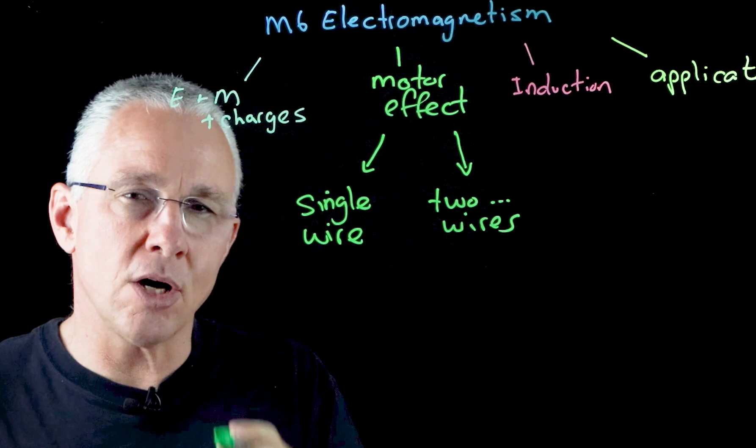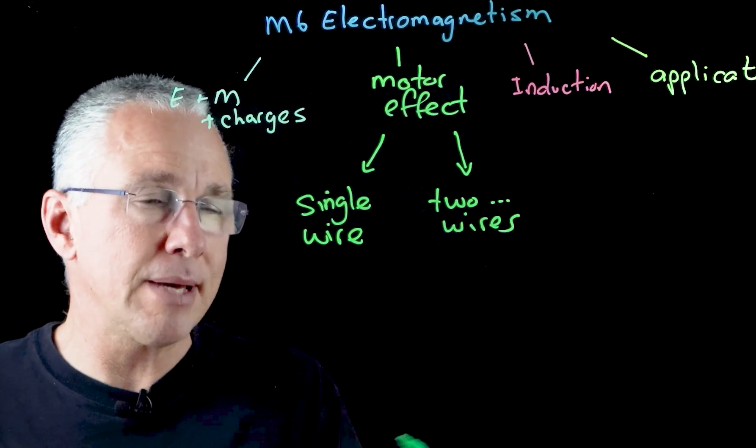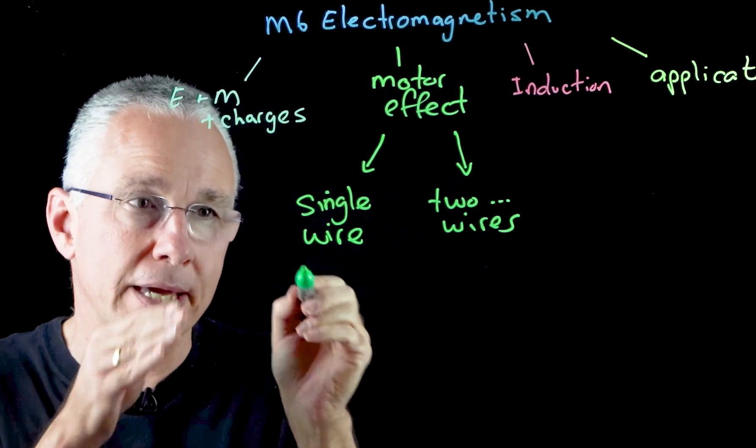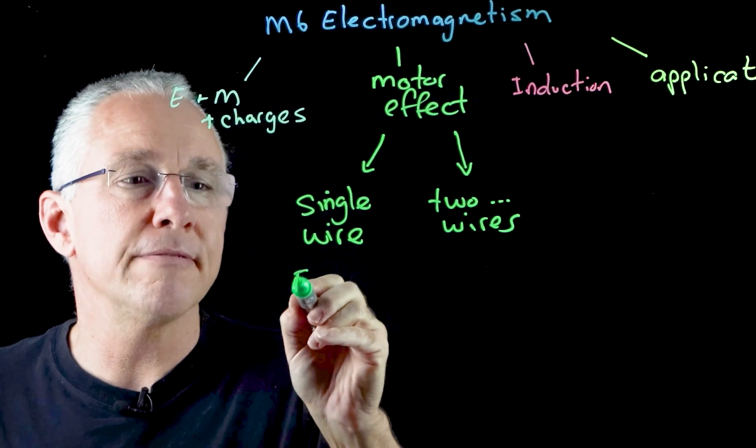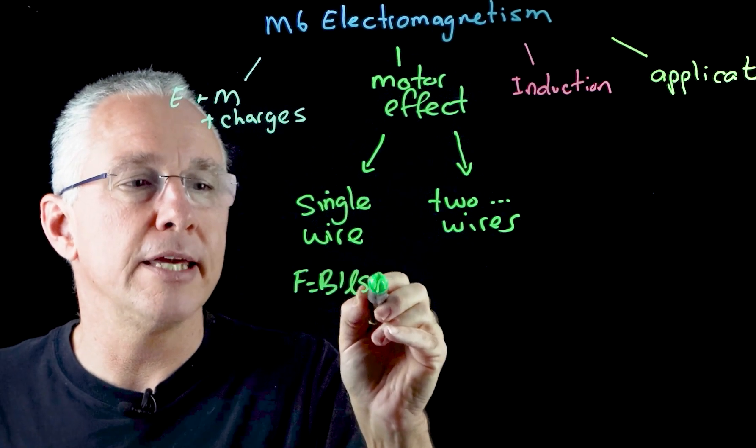And so in the case of our single wire in a magnetic field, the mathematical formula we generally apply just to that situation is F is equal to B I L sine theta.